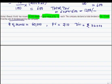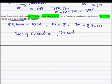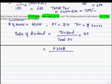The rate of dividend is total dividend paid divided by total face value, multiplied by 100. Total face value is 60,000 shares into Rs 10 face value each, which equals Rs 6,00,000. So rate of dividend equals 72,000 divided by 6,00,000 into 100. Simplifying this gives a rate of dividend of 12%.